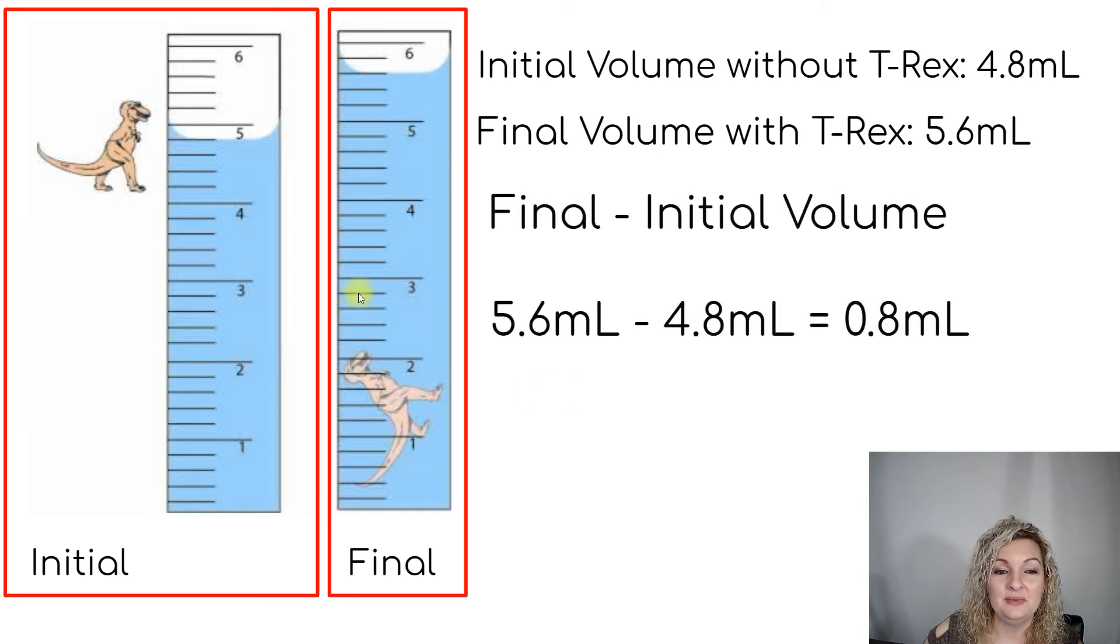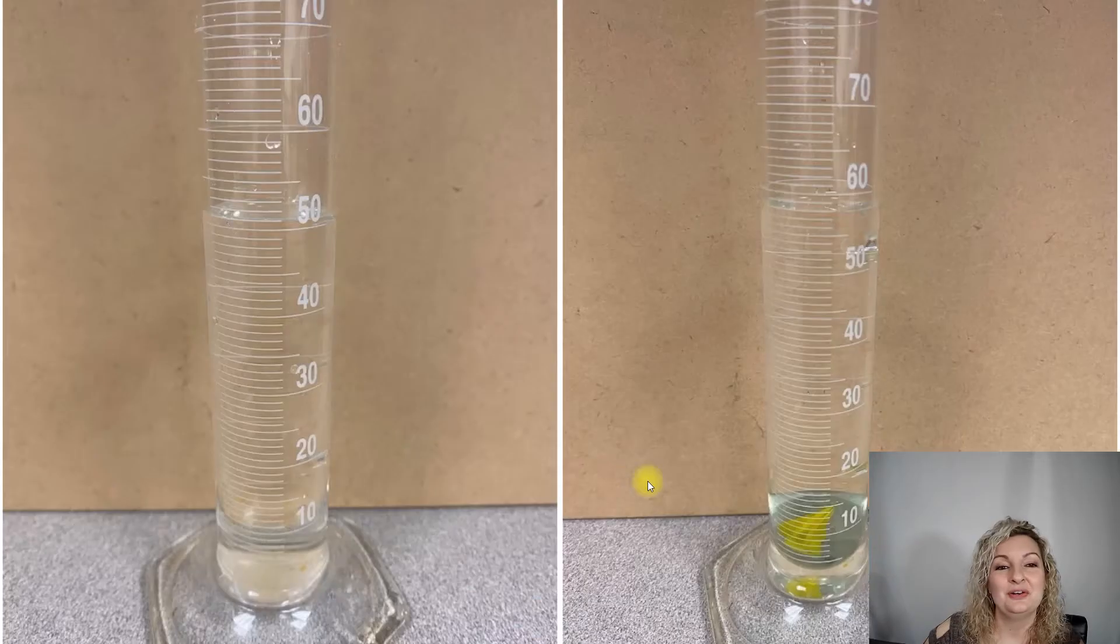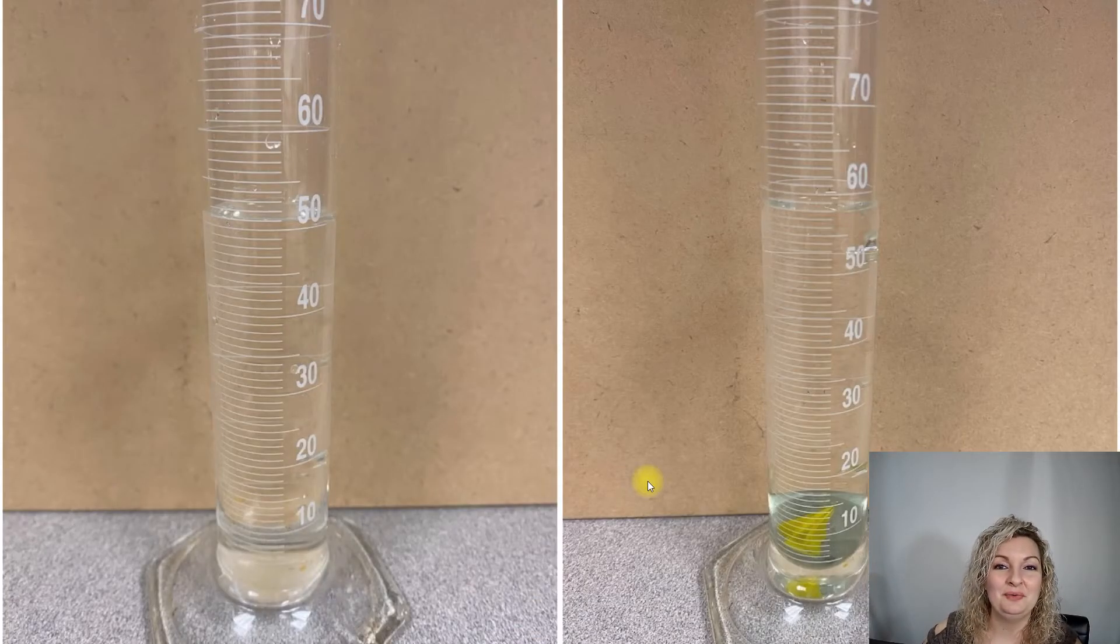So we subtract our final measurement, that 5.6 milliliters, and we're going to subtract it from our initial measurement, which was the 4.8 milliliters. And you're going to get 0.8 milliliters. So that T-Rex has a volume of 0.8 milliliters. So we're going to go ahead and look at one with a graduated cylinder.